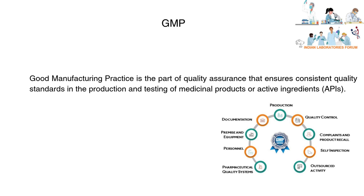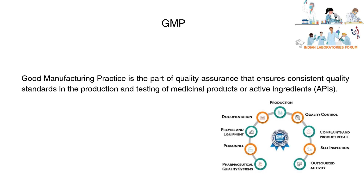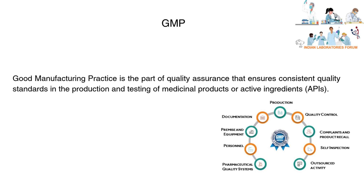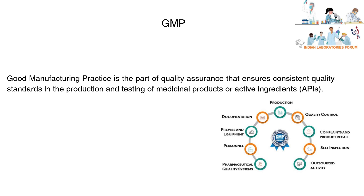GMP — Good Manufacturing Practices — is the part of quality assurance that ensures consistent quality standards in the production and testing of medicinal products or active ingredients. GMP must also be applied in different industries such as the pharmaceutical industry, medical devices, cosmetics, and food industries, to ensure their materials and products are safe for consumers.